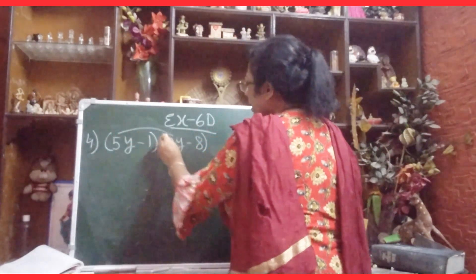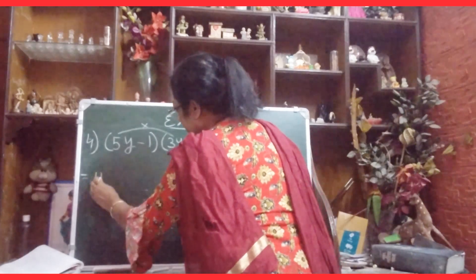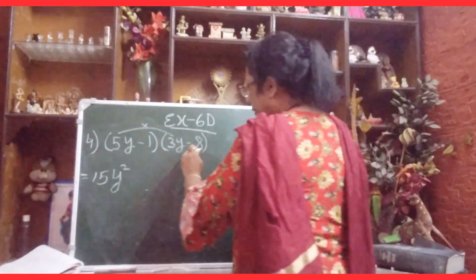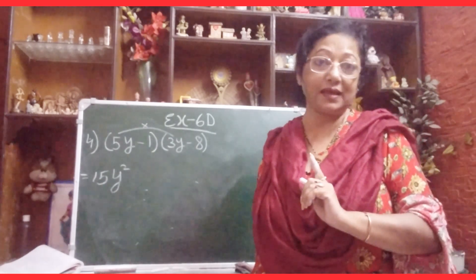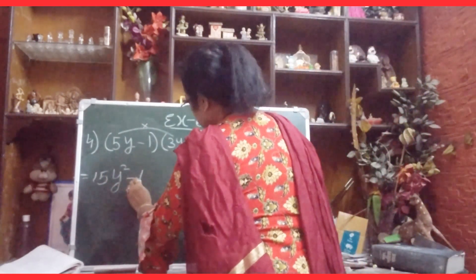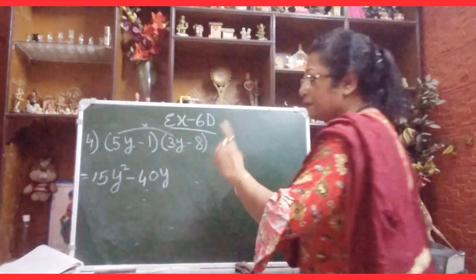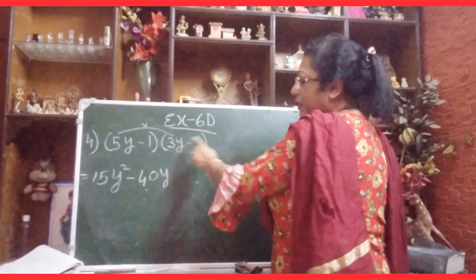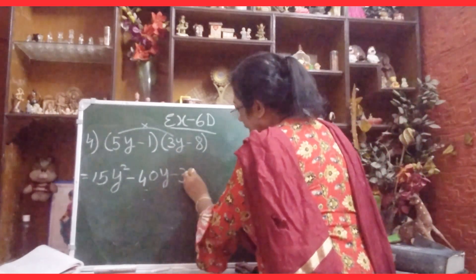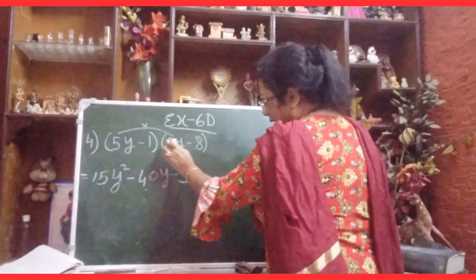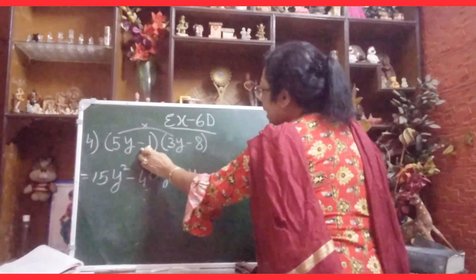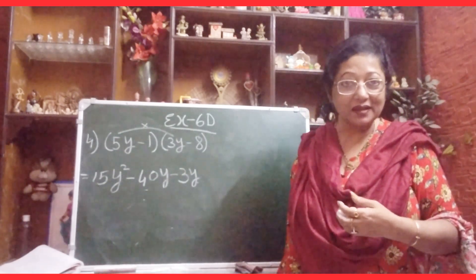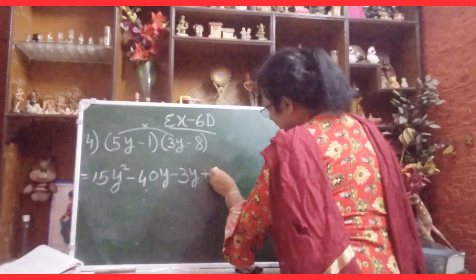We multiply 5y by 3y: 5 times 3 is 15, y times y is y squared, giving 15y squared. Then 5y times minus 8 gives minus 40y. Now minus 1 times 3y gives minus 3y. And minus 1 times minus 8: minus times minus gives plus, so plus 8.